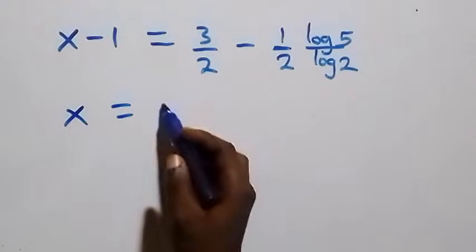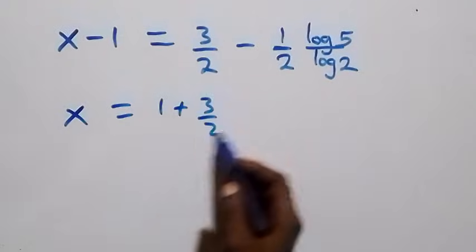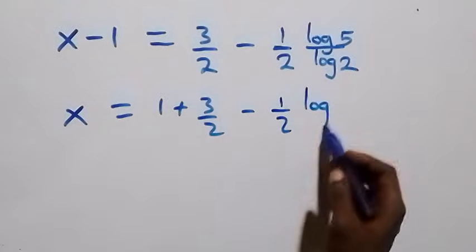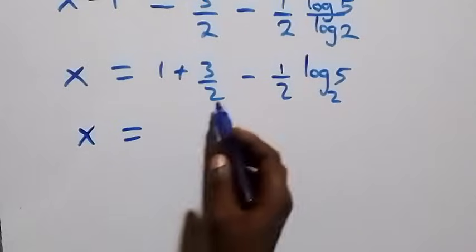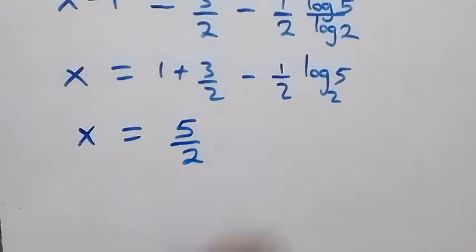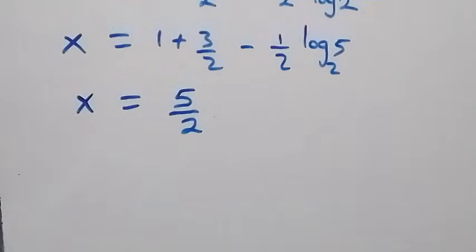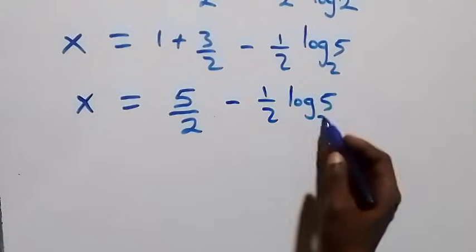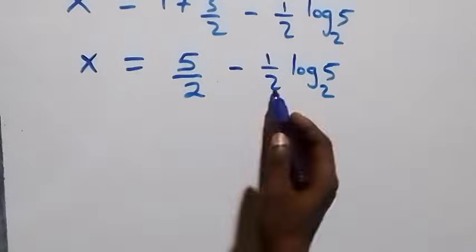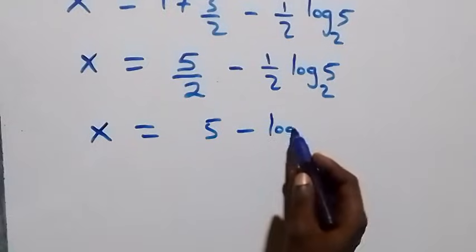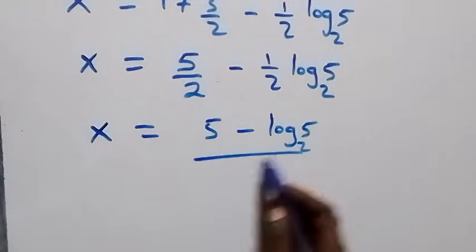So x equals 1 plus 3 over 2 minus log 5 base 2 over 2. We can write this as x equals 2 over 2 plus 3 over 2, minus log₅2 over 2. Then this becomes x equals 5 over 2, minus half times log₅2, which we can rewrite as x equals 5 minus log₅2, all over 2.